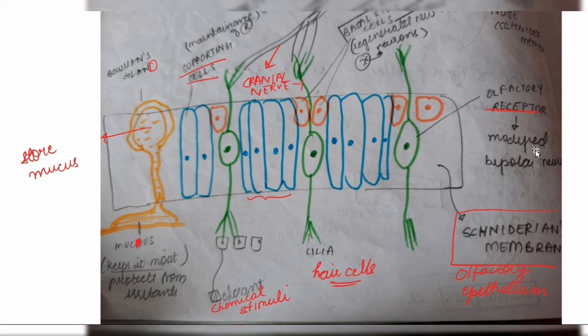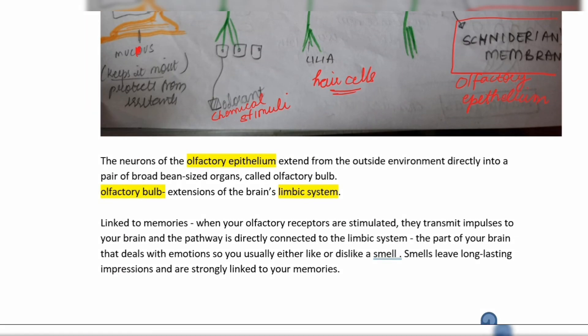The Schneiderian membrane or olfactory epithelium extends from the outside environment directly into one pair of broad bean-shaped, small-sized organs — the olfactory bulbs — which are extensions of the brain's limbic system. These are extremely important lines from NCRT. The limbic system connects the sense of smell to your memory, which is why you like or dislike a smell — it gets stored in memory and is strongly linked with your emotions.